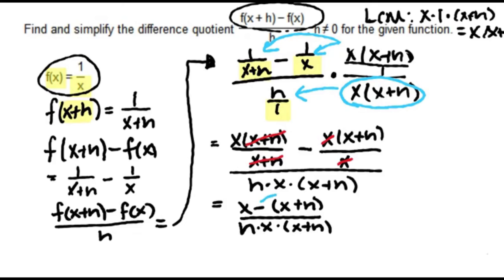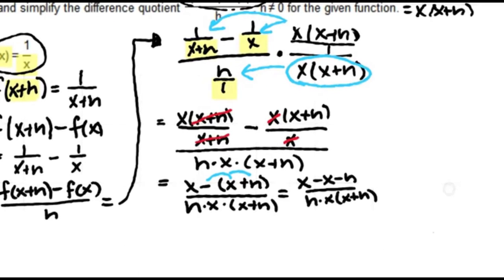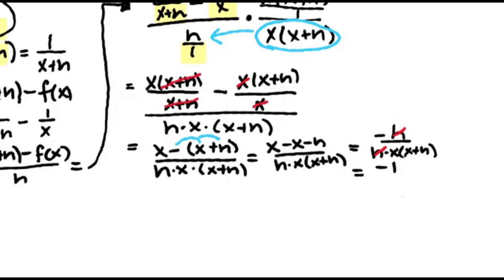Those parentheses are important because the minus sign needs to apply to both terms. In the numerator, using the distributive property, we get x minus x minus h. Since x minus x is 0, we're left with negative h over h times x times x plus h. The h's cancel, and we're left with negative 1 over x times x plus h. That's as far as we simplify this difference quotient.